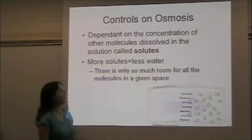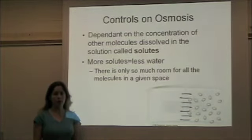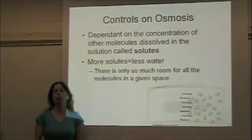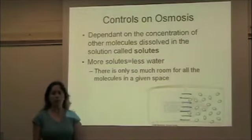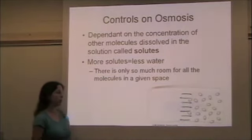Osmosis is dependent on the concentration of other molecules that are dissolved in the water, and those are called solutes. Water is the solvent, and anything that's dissolved in the water, like sugar or salt, that's a solute. So the more solutes there are, the less water, because solute molecules take up space just like water molecules do.